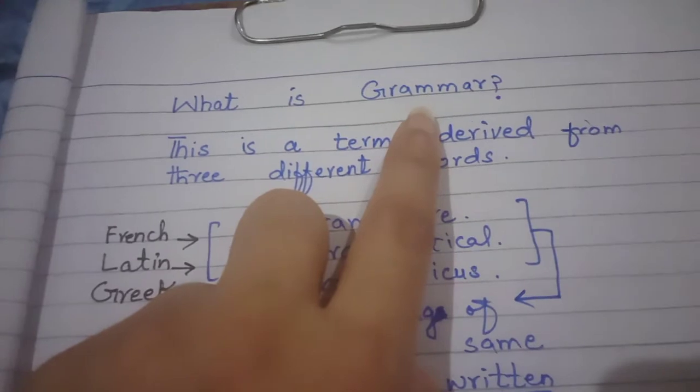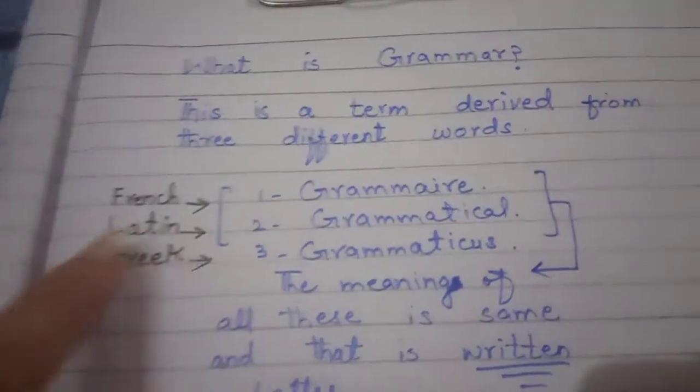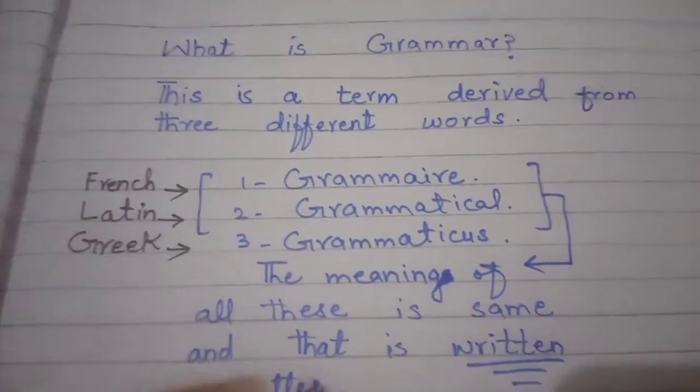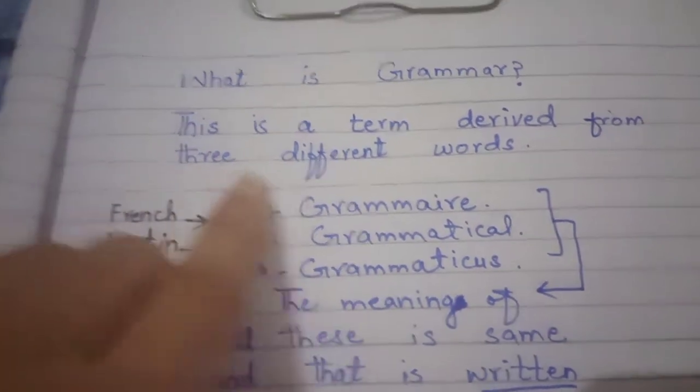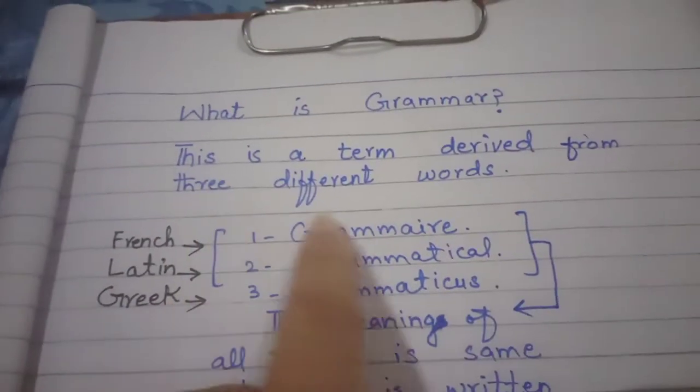About its structure, about its rules. So let's get started with the definition of grammar and the term grammar. This is a term derived from three different words.